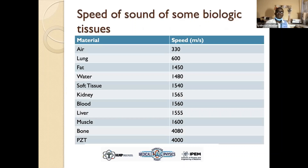This table gives us the speed of ultrasound in some biological tissues, air, and water — including lung, fat, and so on. The last one is PZT, the piezoelectric material used in the transducer of ultrasound. They are very important.